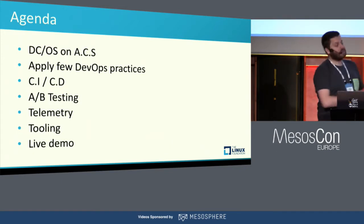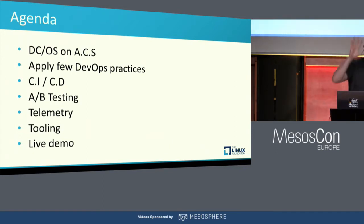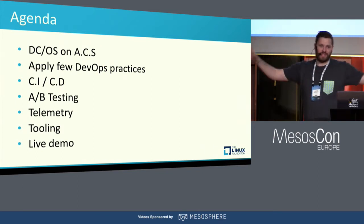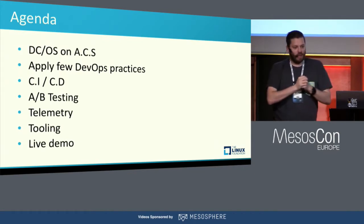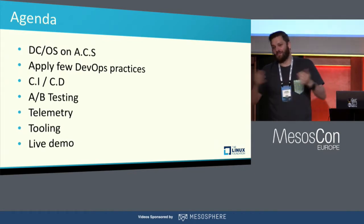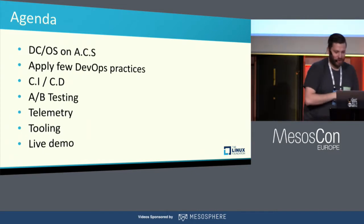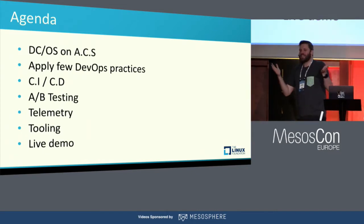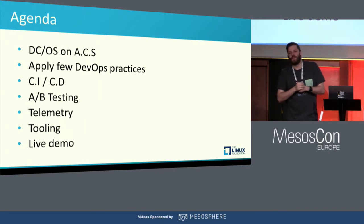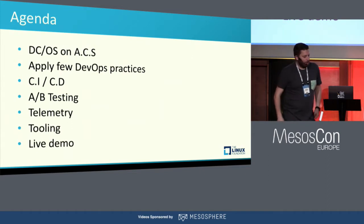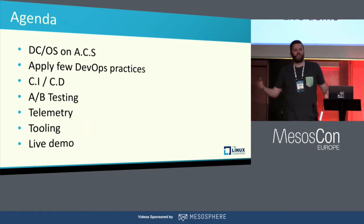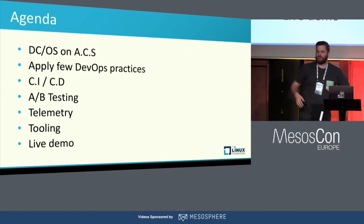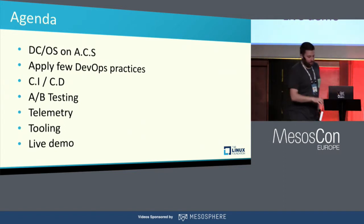Quick agenda: I don't know if you know about ACS. No worries — I'm not here to sell. I'm doing only technical stuff. I think I only have one marketing slide. I'm just going to explain ACS. Maybe you heard about Azure Container Services — it's an easy way to deploy DCOS, Kubernetes, or any container orchestrator on Azure. Then we're going to go deep on CI, CD, and a bunch of DevOps practices, and I'll try to add more and more practices on top of that.